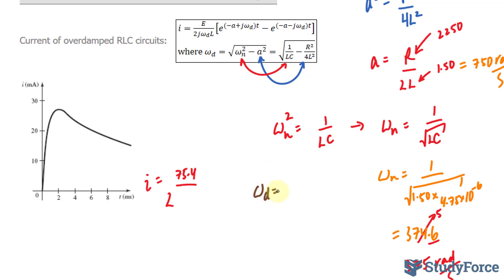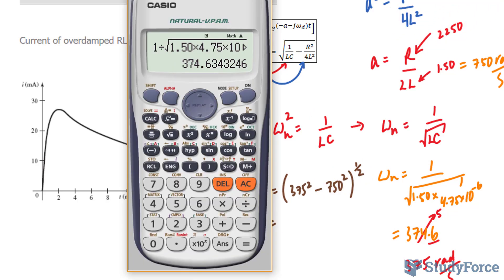We have omega d is equal to the square root of what I found omega n to be, which is 375 squared, minus, instead of the square root, I've raised it to a power of half, the same thing, 750 squared. If I use my calculator, I'll end up with an error, and here's why. This number is less than this number, and square rooting a negative number does not give you a real number. So, let's find out what the answer should be. 375 squared minus 750 squared gives us this number. And, if we square root that, our calculator will go insane and say that there's a math error.